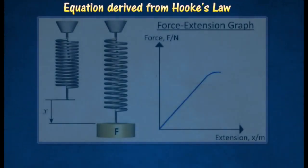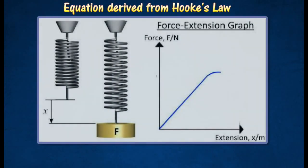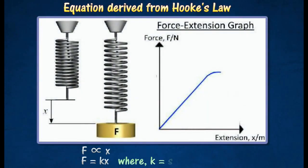The following equation can be derived from Hooke's Law. If the extension of a spring produced by a force F is X, then F is equal to KX, where K is the spring constant. The spring constant K can be defined as the force that is needed to extend a spring by a unit length.